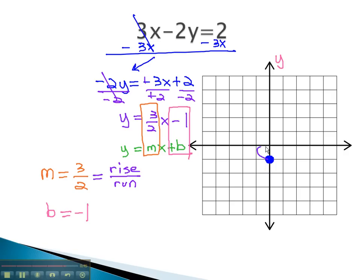This means our graph will rise 3 and run 2 units. From our point, we rise 1, 2, 3 units, and run 1, 2 units to get to our next point.